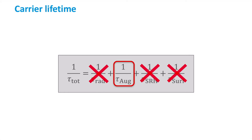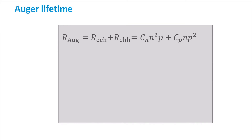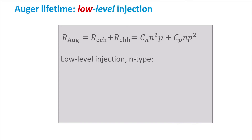We are left with the lifetime for Auger recombination. For the Auger recombination mechanism, the rate is given by this expression. As a reminder, in this expression the recombination rate R_EEH represents the Auger recombination process in which the energy of an electron-hole recombination event is transferred to an electron in the conduction band, whereas R_EHH represents the process in which this recombination energy is transferred to a hole in the valence band. C_N and C_P are proportionality constants. If we now consider an N-type material and low-level injection, we can work out that the Auger recombination rate is given by this expression. At low-level injection, the EEH process will dominate and the electron density in N-type material is essentially equal to the donor concentration.